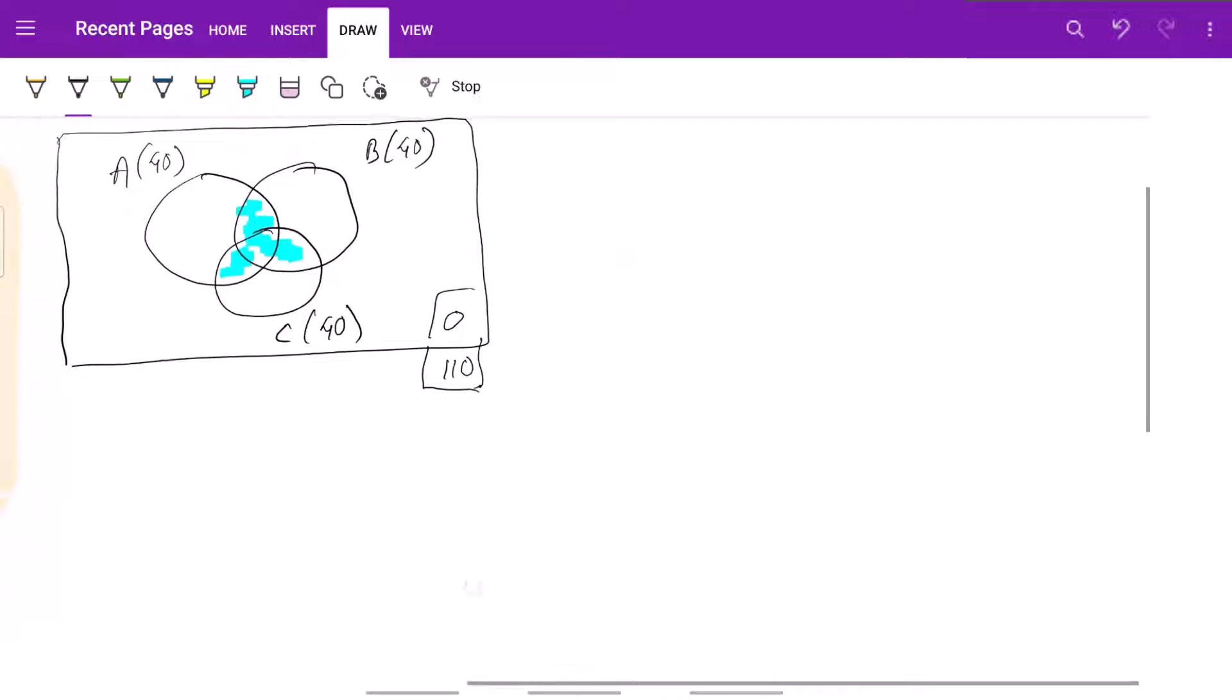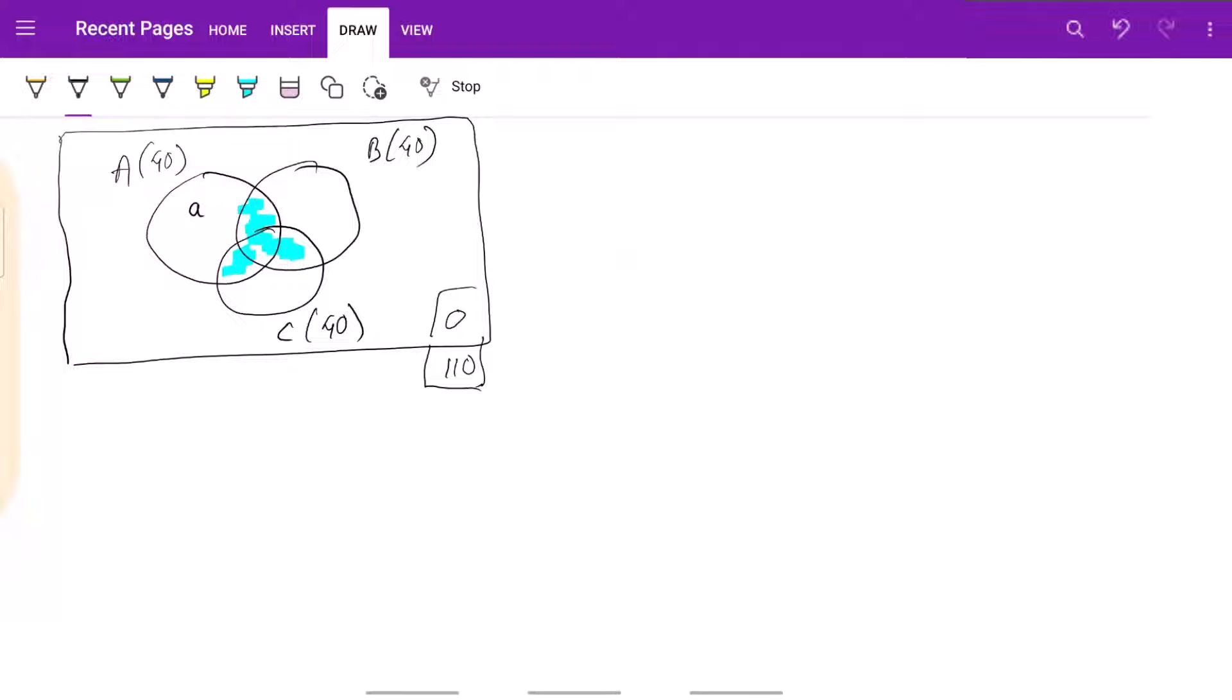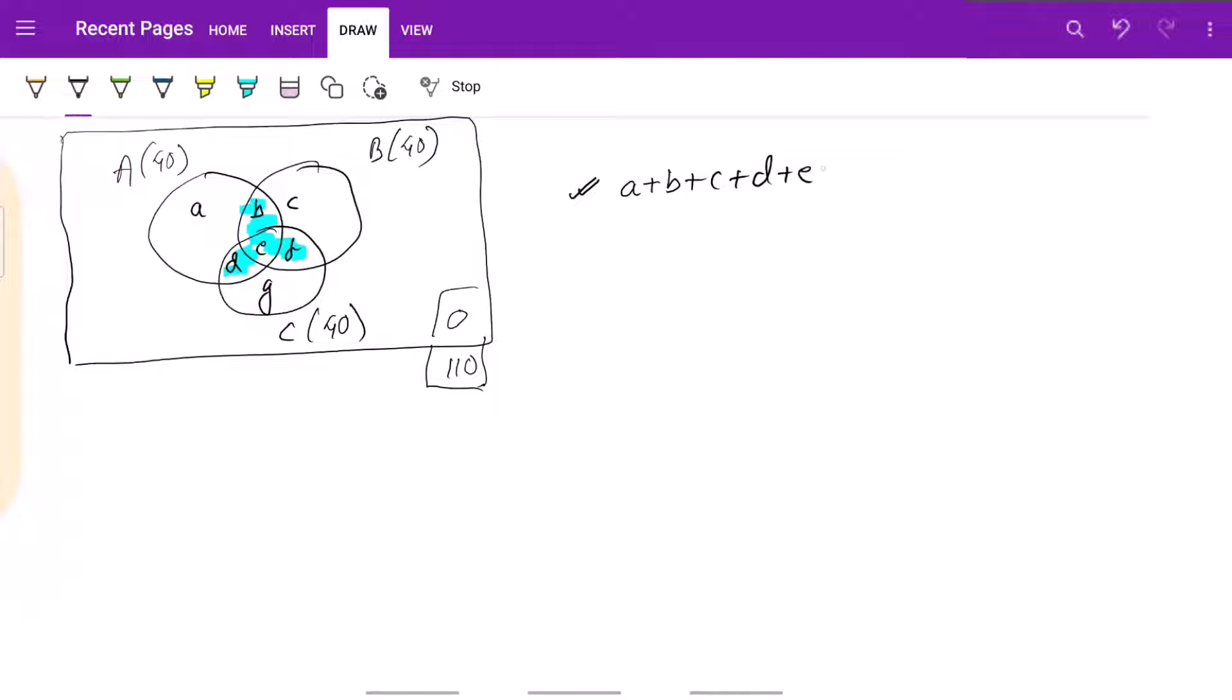So let us label these areas: this is small a, small b, small c, small d, small e, small f, small g. So let us write down our basic equation. The first equation that we have is a plus b plus c plus d plus e plus f plus g. This entire thing is equal to 110. This is our first equation.